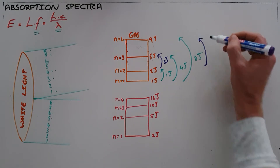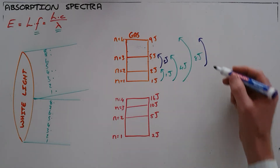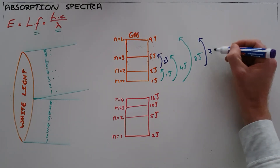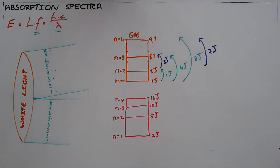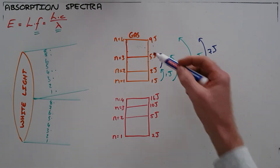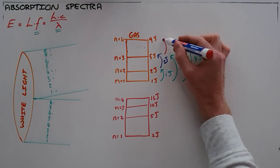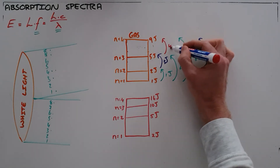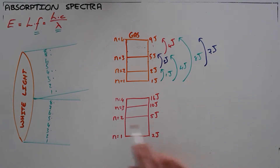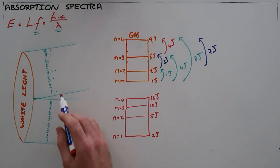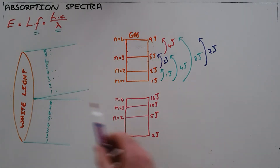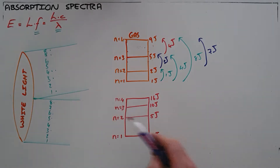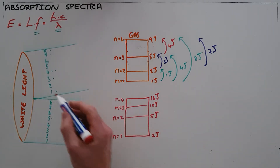A transition from the second to the fifth would require 7 joules of energy, and from the third to the fourth energy level would require 4 joules. So if we shine a continuous spectrum of light through this gas, those specific energies will be absorbed.